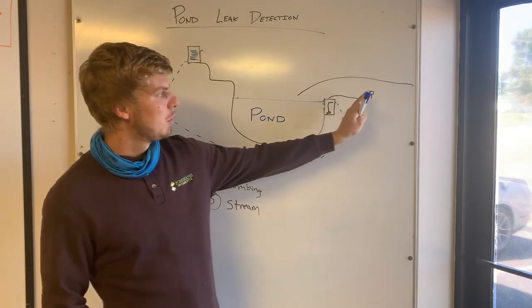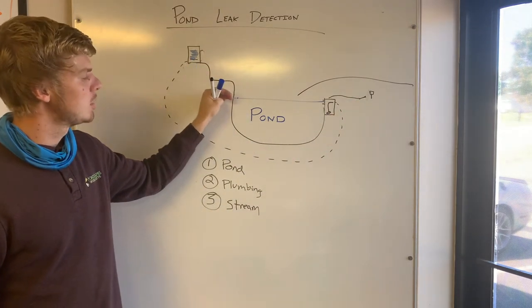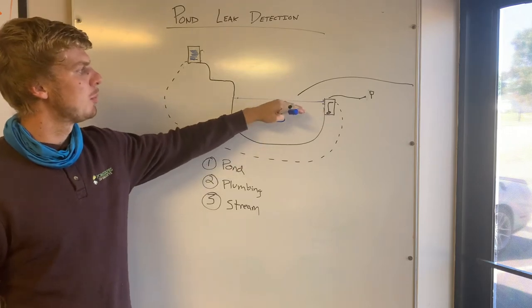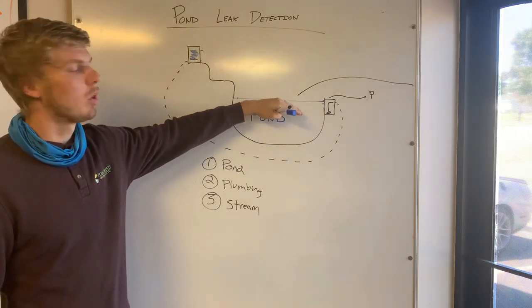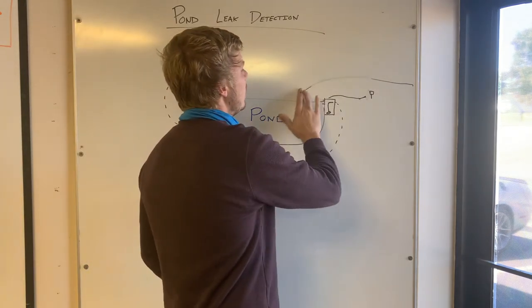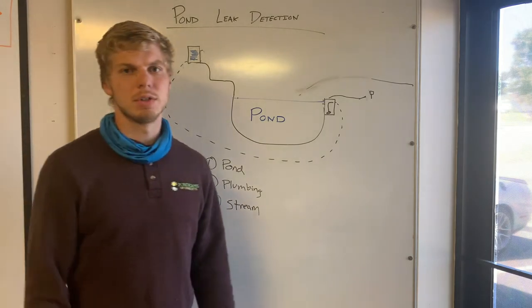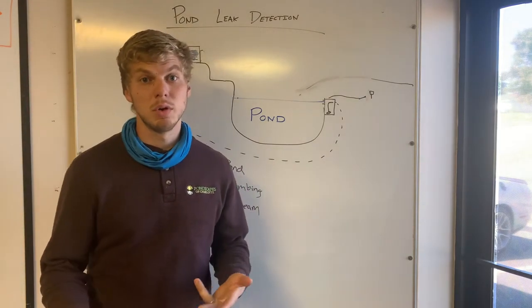So once you unplug the pump, let the water drain from the stream, you're going to fill up the pond to its normal operating height and then you're going to shut off the hose and you're going to wait 24 hours overnight with no rain.